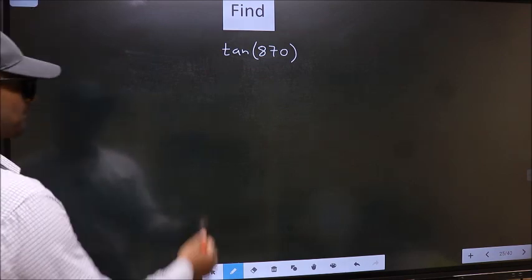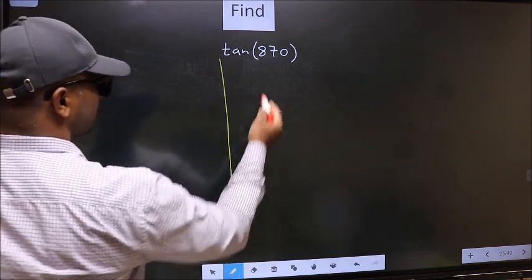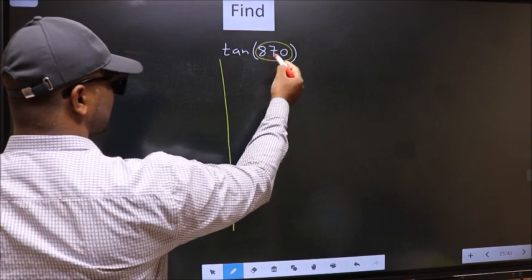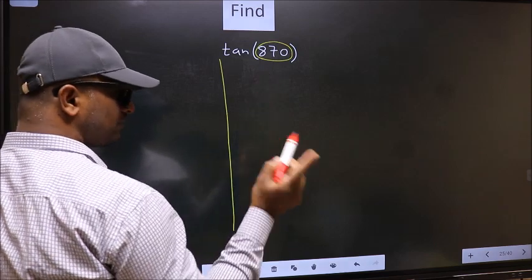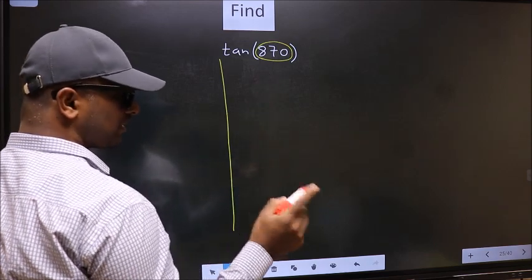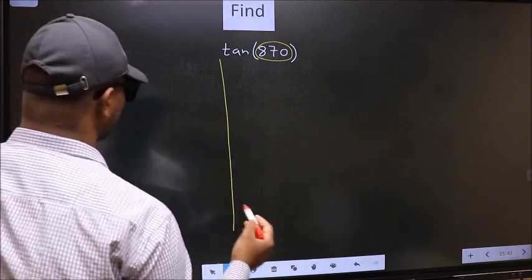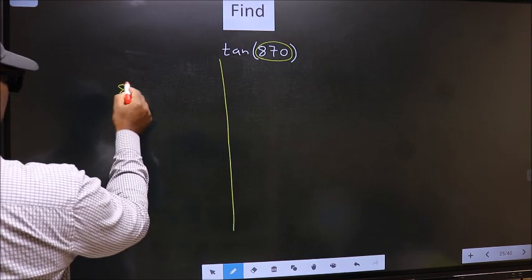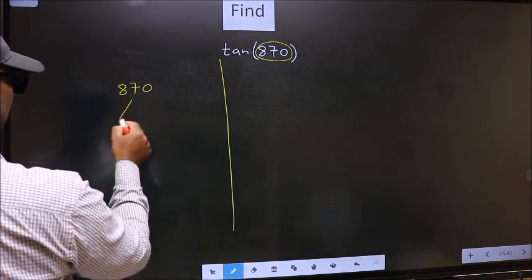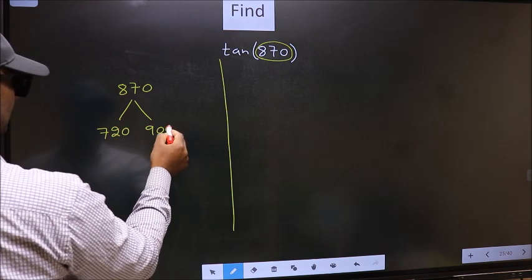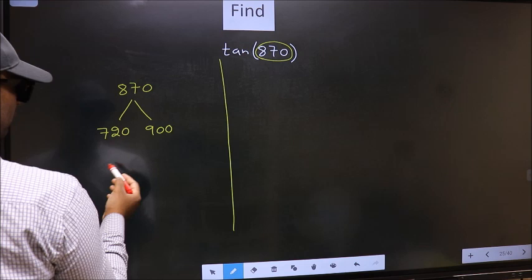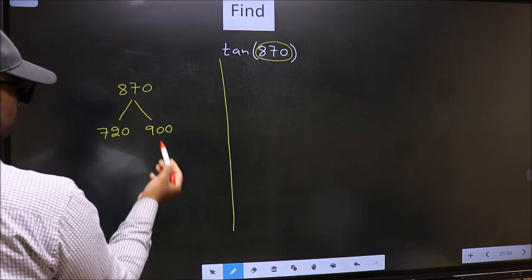See, here we have 870. Now we should check: 870 lies between which two multiples of 180? What I mean is, 870 lies between 720 and 900. This is 180×4 and this is 180×5.